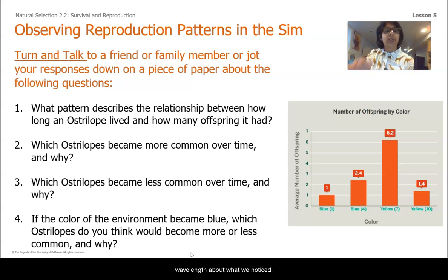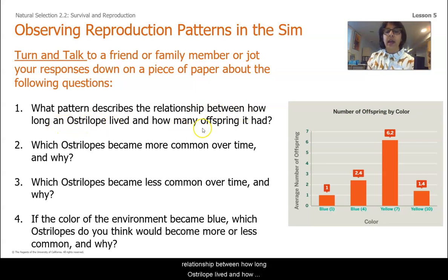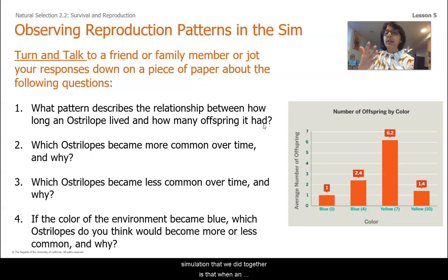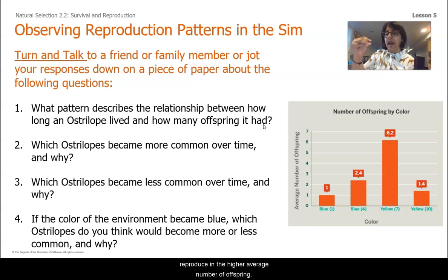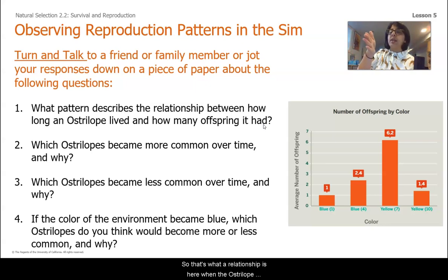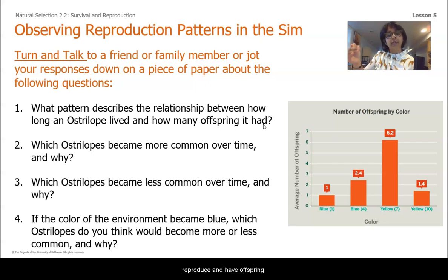So the first question: what pattern describes the relationship between how long an Ostrilope lived and how many offspring it had? What I noticed in the simulation is that when an Ostrilope was able to live longer, it had more time and opportunity to reproduce, and thus had a higher average number of times it reproduced and a higher average number of offspring. When the Ostrilope lives longer, it has more opportunities to reproduce and have offspring.